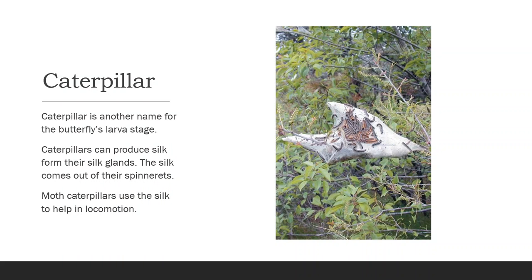The caterpillar stage is the larva stage of your butterflies and moths. Caterpillars can produce silk from their silk glands, and it comes out of their spinnerets — the silk glands are where it's stored, and then the silk comes out of the spinnerets. Moth caterpillars use the silk to actually help in locomotion.